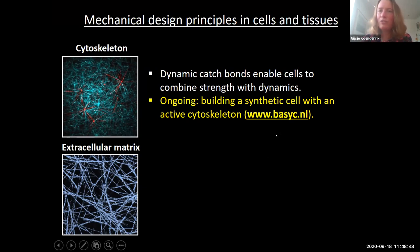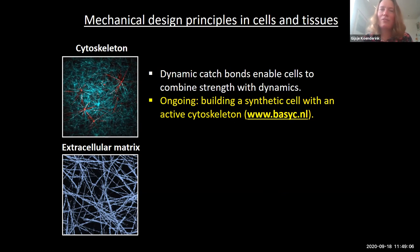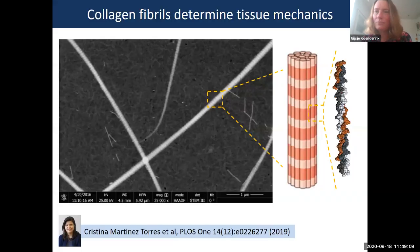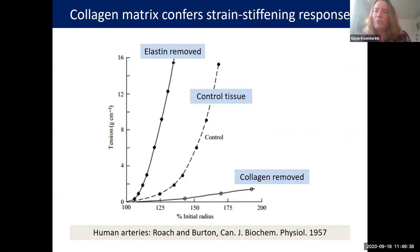We're also using these synthetic cytoskeletal networks to incorporate them inside vesicles to make synthetic cells. But I also want to give a second example, which is about the extracellular matrix — tissue mechanics essentially. The relevant protein to think about here is collagen. It's itself a semi-flexible polymer chain able to bundle in a highly ordered fashion to form thick cable-like fibers, seen here in electron microscopy. These collagen fibers are the main determinant of tissue mechanics.